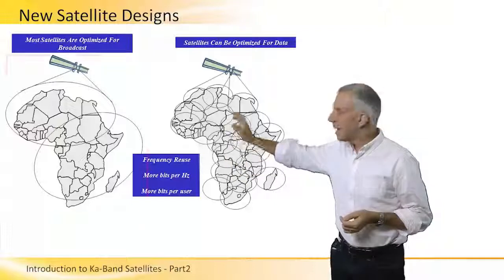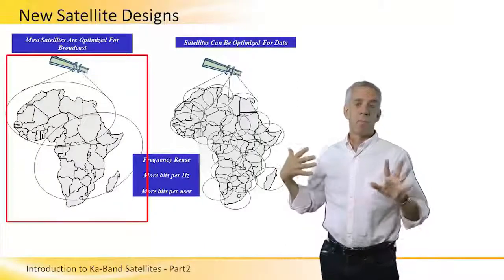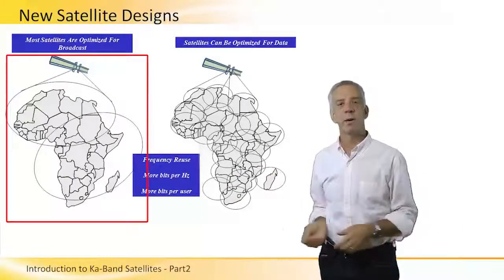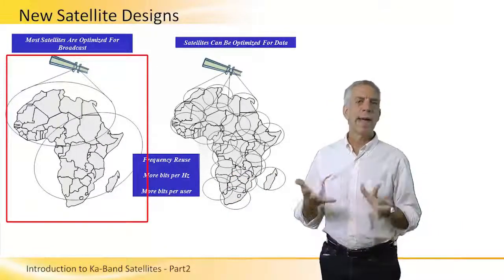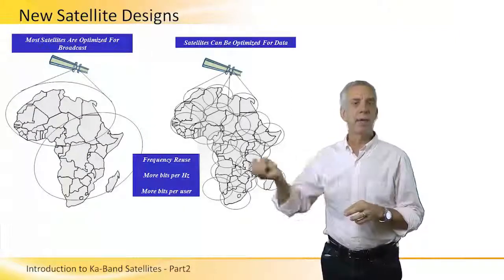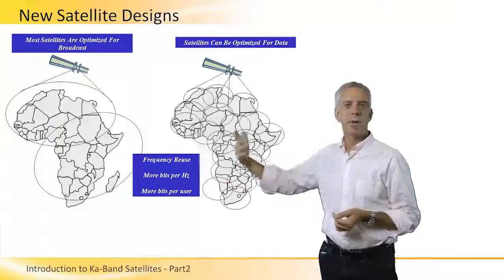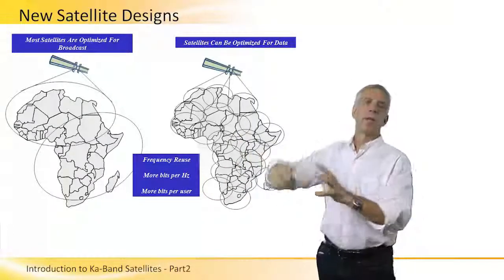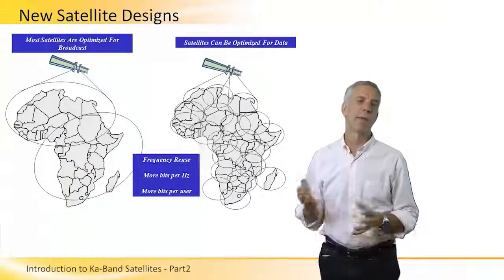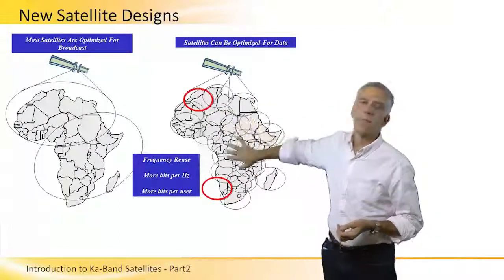A satellite designed for broadcast has very wide beams, well-suited for TV where you want to reach as many people as possible across a wide geographic area. But for data, when a satellite carries data traffic, that traffic is generally going to only one user terminal. So we don't need to distribute as widely as possible — this allows us to apply frequency reuse. Satellites optimized for data have lots and lots of user beams.